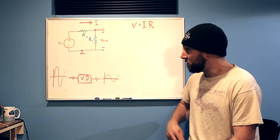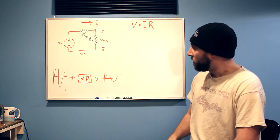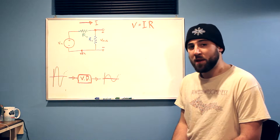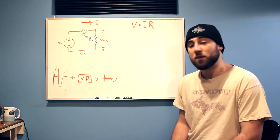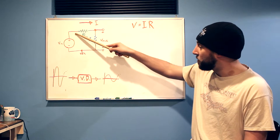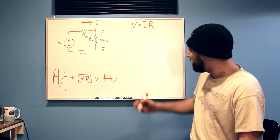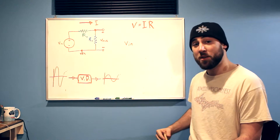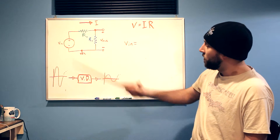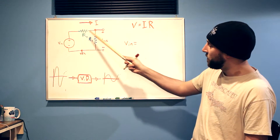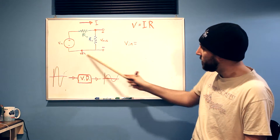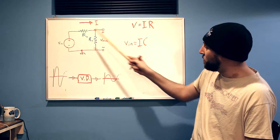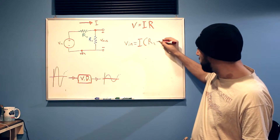Let's start with this node right here. There are a couple different ways to mathematically describe how it relates to ground. There's a path to ground through the voltage source, so we could just call it V_in. But we can also describe it as our current times the resistance of our circuit along that path to ground — which is our current times the series sum of R2 plus R1.